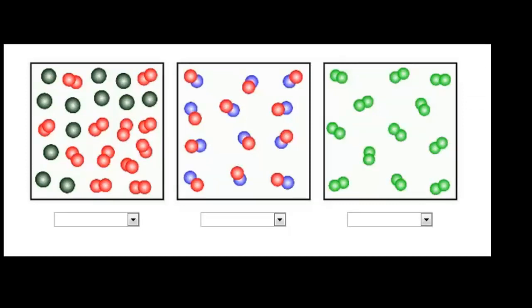Here are some examples to help practice determining if matter is a pure substance or a mixture. These examples show matter at the particulate or atomic level. The first example, on the far left, is a sample of black atoms combined with two red atoms that are bound. Because these two red atoms are bound, they're considered an element — matter composed of one type of atom. So the black dots represent one element and the two bound red dots represent another element. Collectively, this would be a mixture, since a mixture is two or more pure substances in a particular volume.